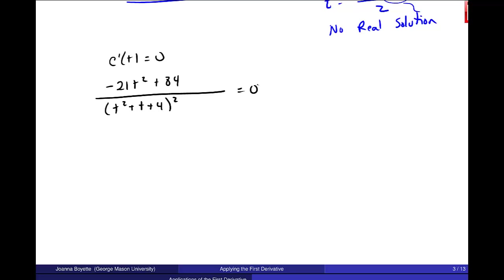Set c prime of t equal to 0, so I get negative 21t squared plus 84 all over t squared plus t plus 4 squared equals 0. Again, the best, most awesome thing to do when you have fractions in an equation is to multiply by the LCD by this t squared plus t plus 4 squared. It will cancel on this left side and on the right side I'll still just get 0. So I'm left with negative 21t squared plus 84 is 0, and then I just go ahead and solve. 84 divided by 21 should be 4, plus or minus the square root of 4, so I should get plus or minus 2 as my critical value.